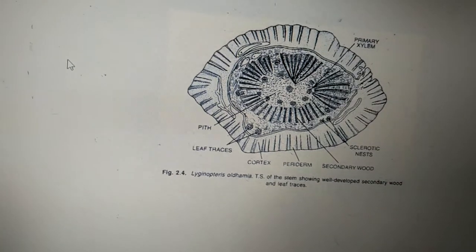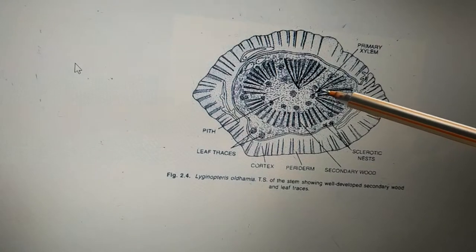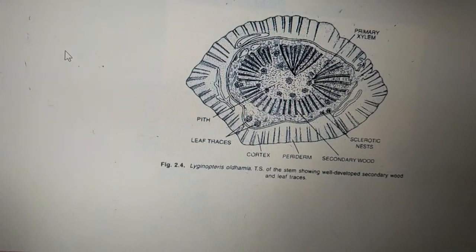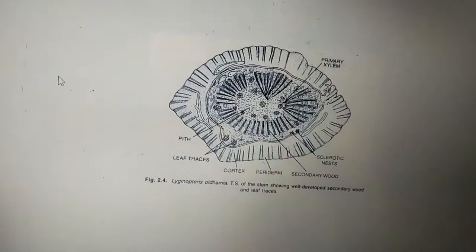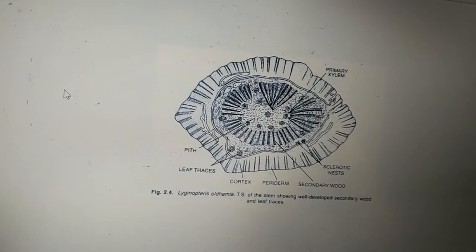Even some strands of primary xylem are visible here. These primary xylem are mesarch type. Now we have different kinds of xylems: endarch, exarch, followed by mesarch.